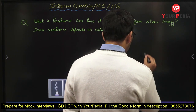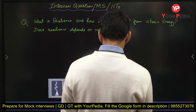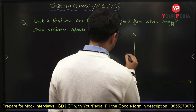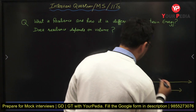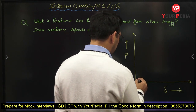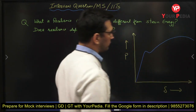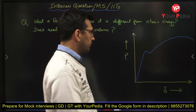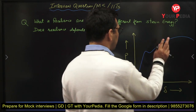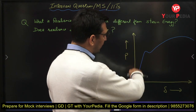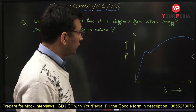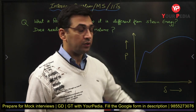Let us say I have a force-deflection diagram. I am deforming the material gradually — keep in mind I am loading the material and deforming it in tension gradually. The force-deflection diagram will look something like this, similar to a stress-strain diagram. In a UTM (universal testing machine) you first get the force-deflection diagram.